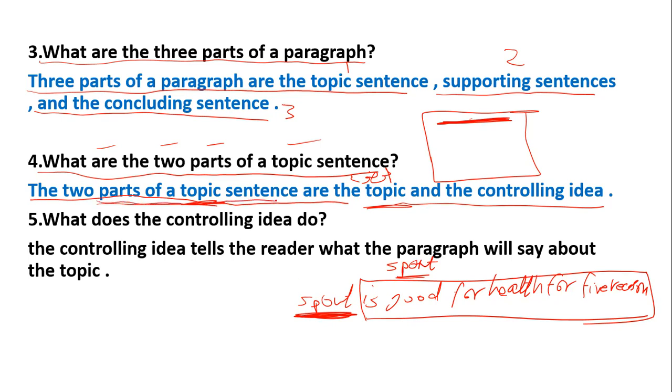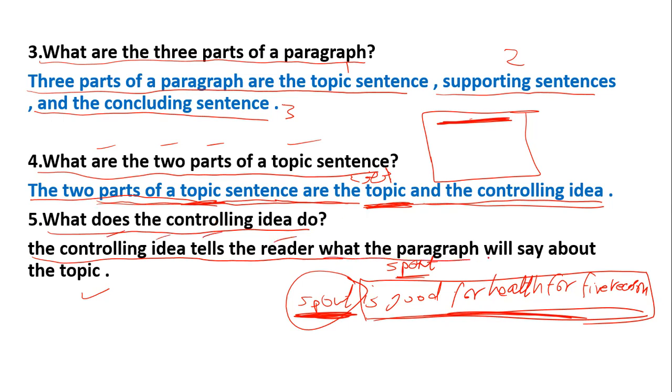The two parts of topic sentence are the topic and the controlling idea. What does the controlling idea do? The controlling idea tells the reader what the paragraph will say about the topic. This is the controlling idea.